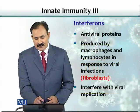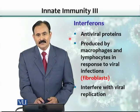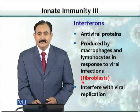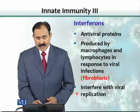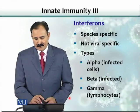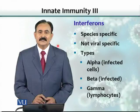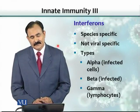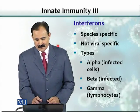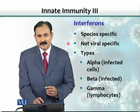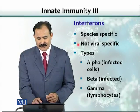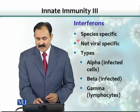Another protein group is called interferons. They are antiviral proteins produced by macrophages, lymphocytes, and fibroblasts. They interfere with viral replication — that is the reason they are called interferons. Interferons are very species-specific, meaning the interferon produced by humans is not effective in animals, and vice versa. However, interferon produced against one virus is effective against another, so they are not virus-specific, but species-specific.